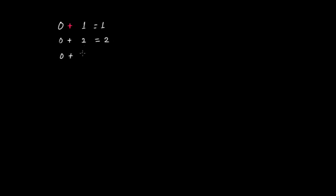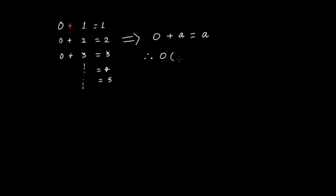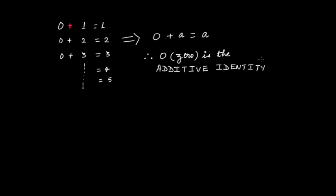Mr. Zero goes to three — what would you get? You would get three. And so on — you will get four, you will get five. What does that mean? If you add zero to any whole number, you would always get back that whole number. And therefore zero is the additive identity of whole numbers.